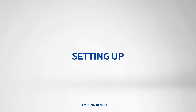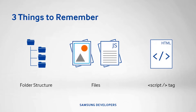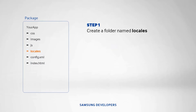When setting up for your project's localization, there are three things to remember: folder structure, files, and the script tag in your HTML pages. The first step is to create a new folder named locales in your project's root. Inside the locales folder, the languages are distinguished by the Internet Assigned Numbers Authority or IANA language tags.